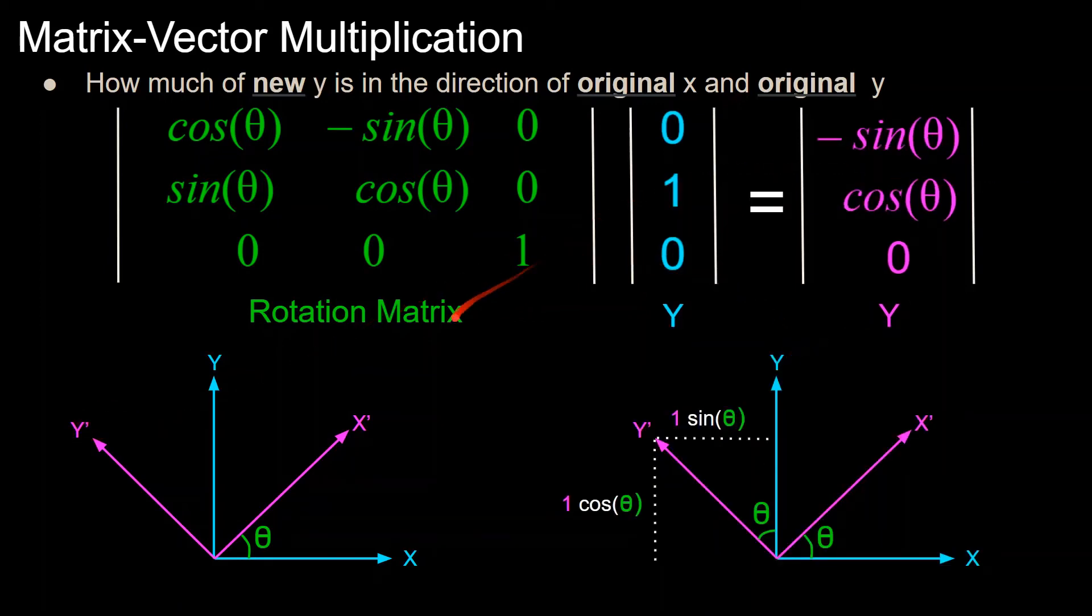So here, we're going to take a look at how to calculate the coordinates of this new y-rotated vector, which, again, we're going to use the same rotation matrix because this is encoding the same rotation about the z-axis. The only thing we're going to change is that we're going to plug in 0, 1, 0, which corresponds to the y-axis base vector. And we're going to see how that comes up with this value.